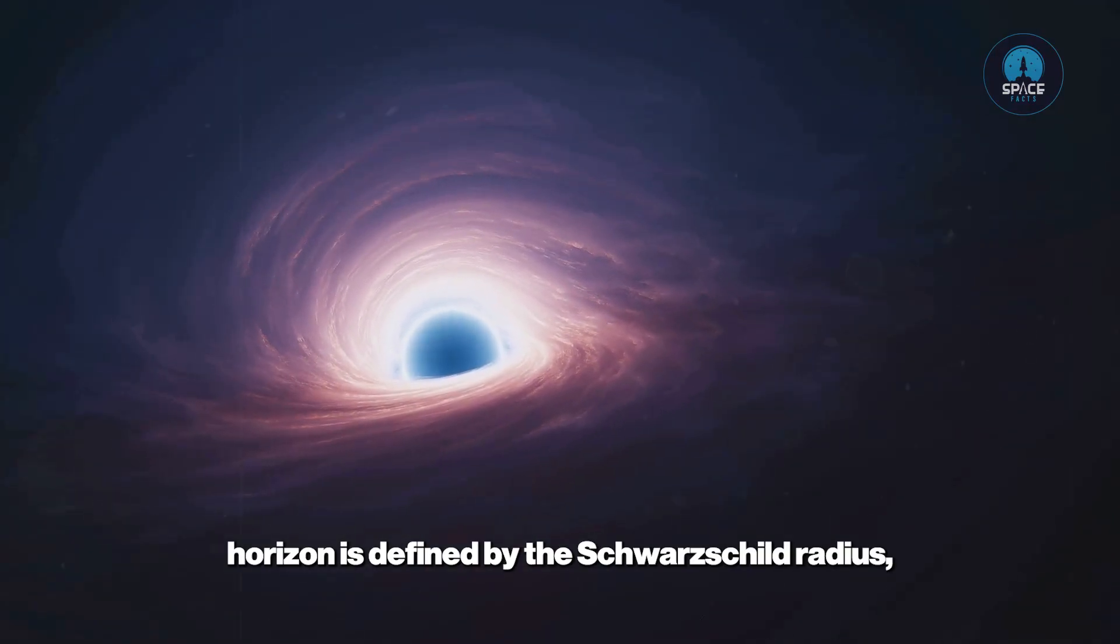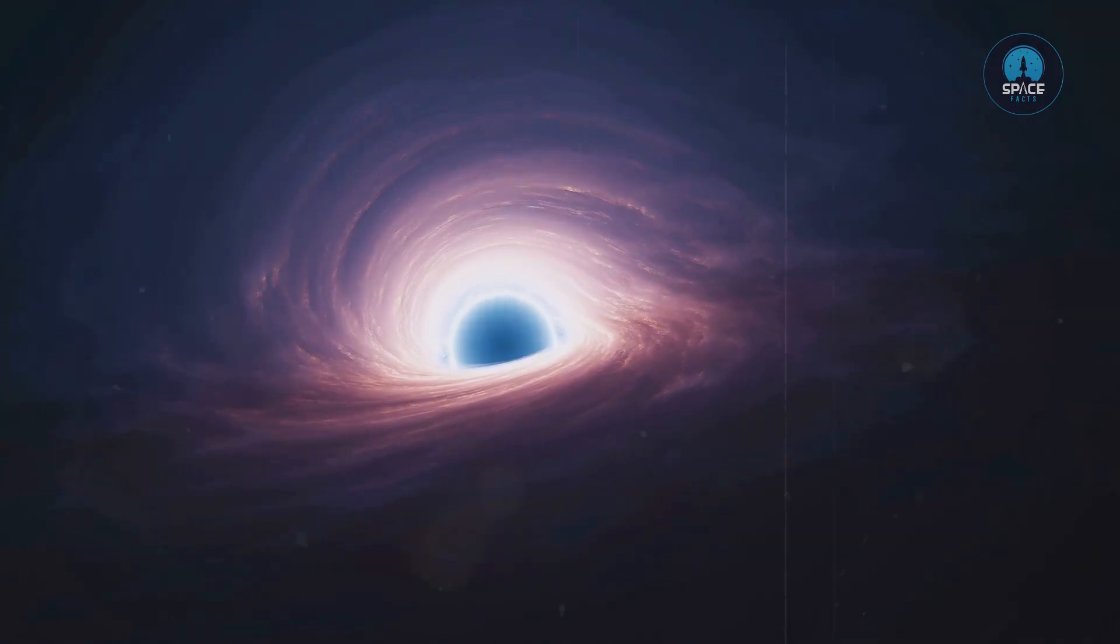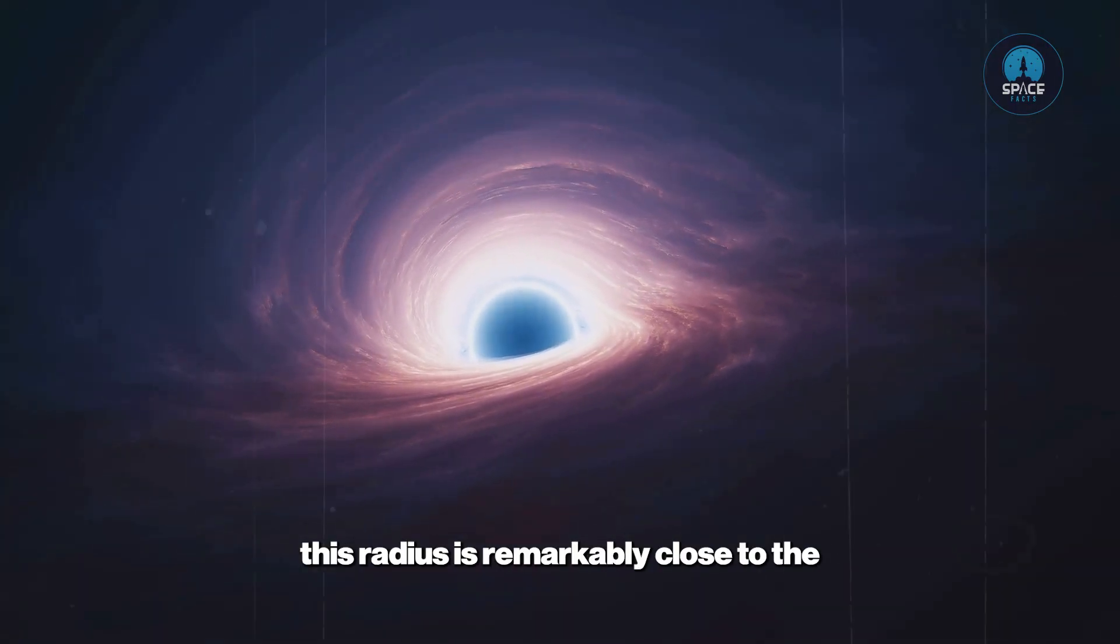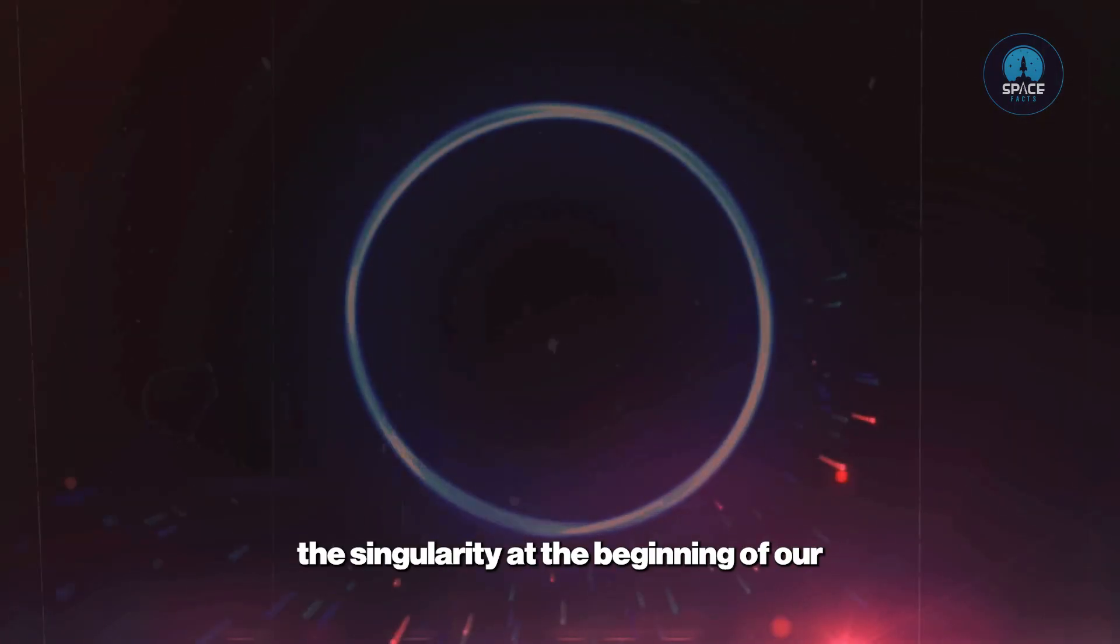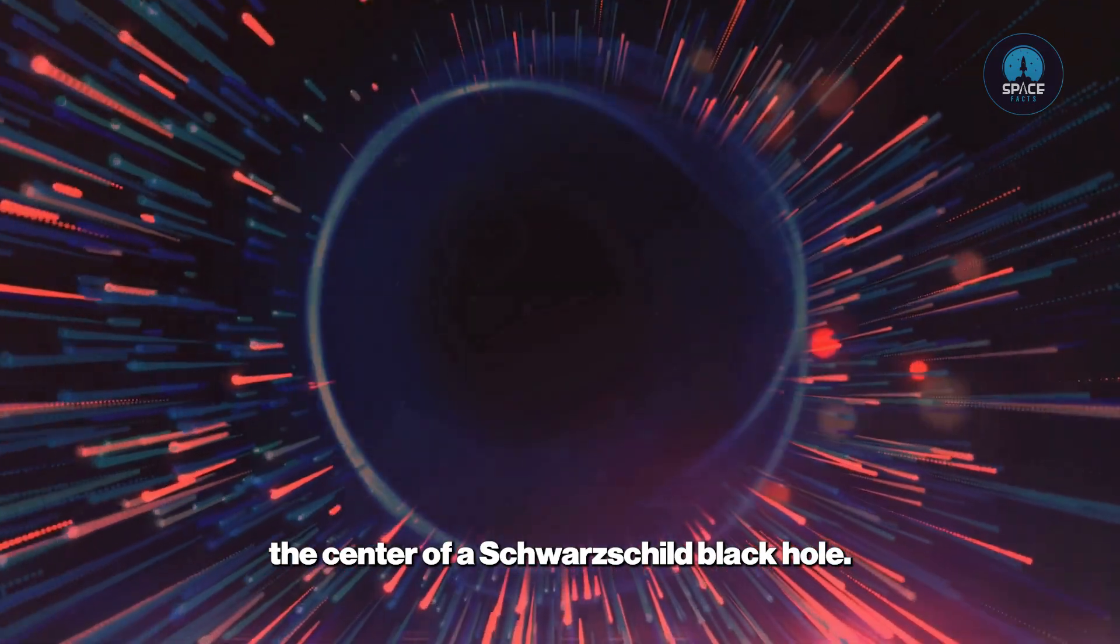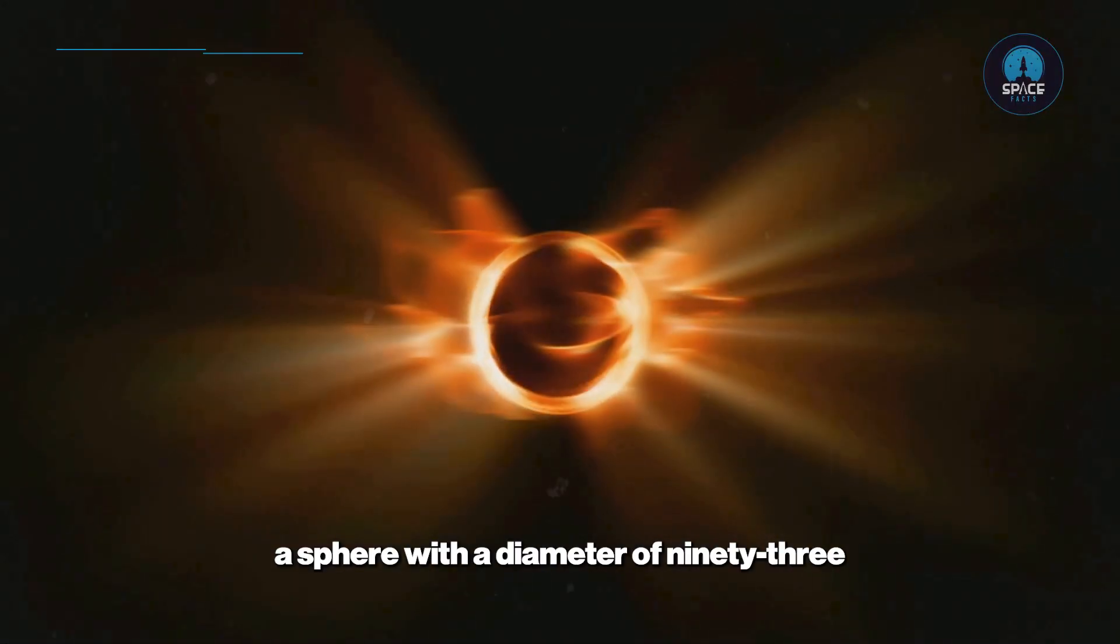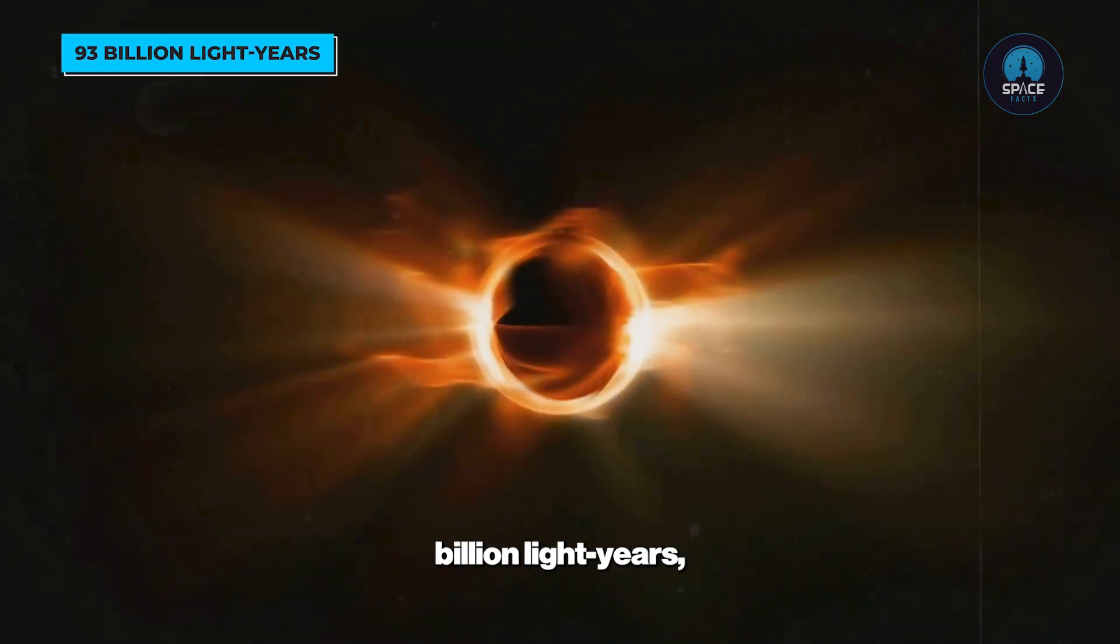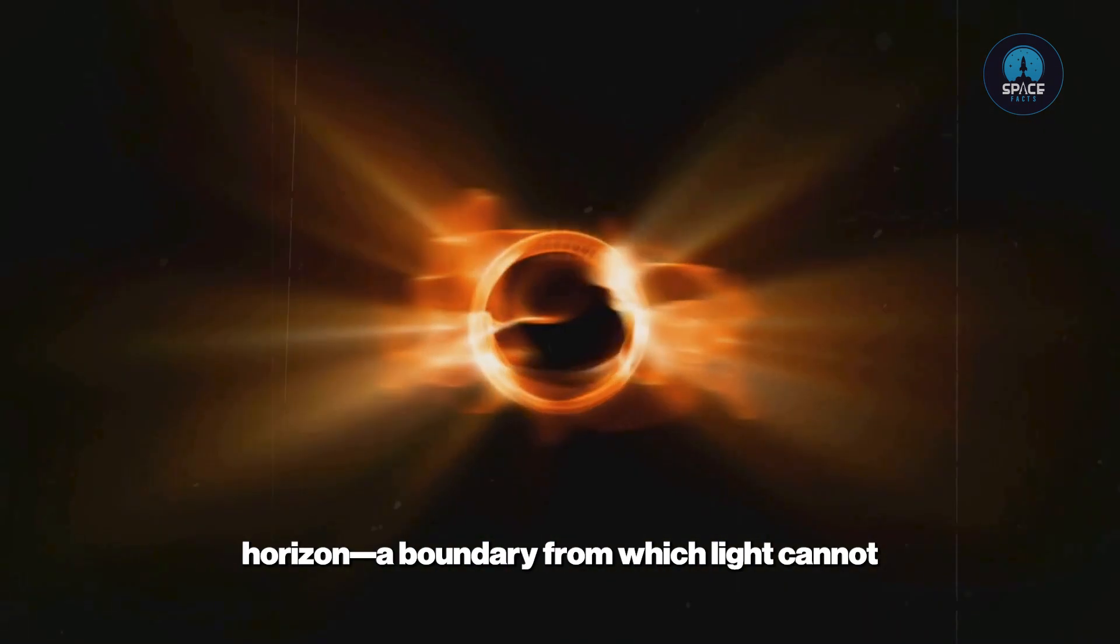The size of this black hole's event horizon is defined by the Schwarzschild radius, and for a universe with the mass of ours, this radius is remarkably close to the radius of our observable universe. Mathematically, the singularity at the beginning of our universe is similar to the singularity at the center of a Schwarzschild black hole. The edge of our observable universe, a sphere with a diameter of 93 billion light years, acts much like a black hole's event horizon, a boundary from which light cannot escape to an outside observer.